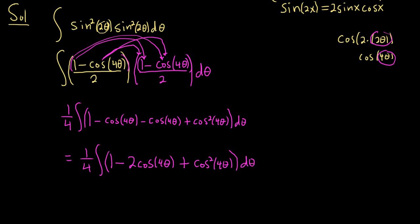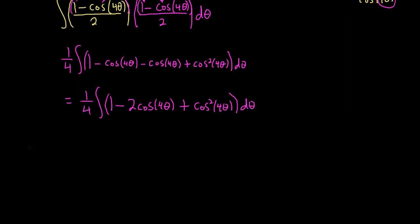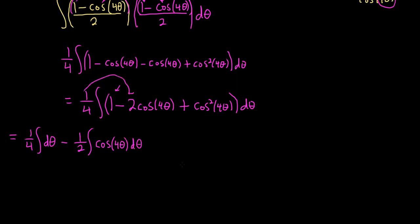We can break this up into three integrals. The first is 1 fourth times the integral of d theta. The second is minus 1 half times the integral of cosine 4 theta d theta (since 1 fourth times 2 equals 1 half). The third is plus 1 fourth times the integral of cosine squared of 4 theta d theta.